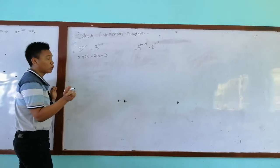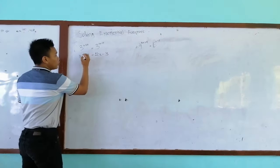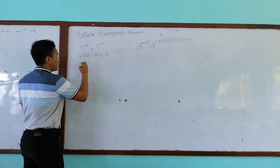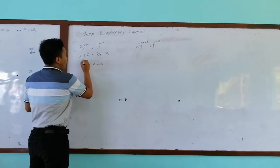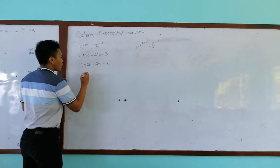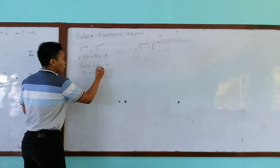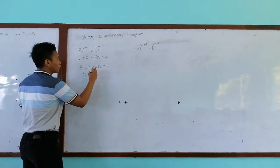So the first thing to do is that we will transpose x to the other side and negative 3 to the other side. So it will become 3 plus 2 is equal to 2x minus our x. So 5 is equal to 2x minus x is equal to x.